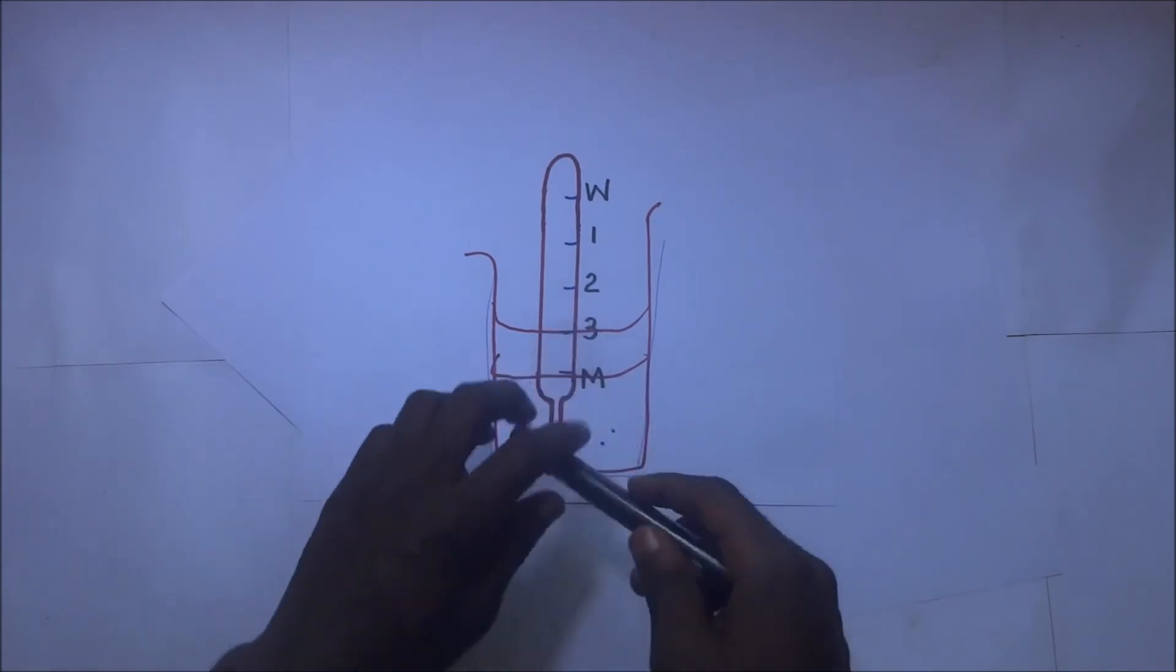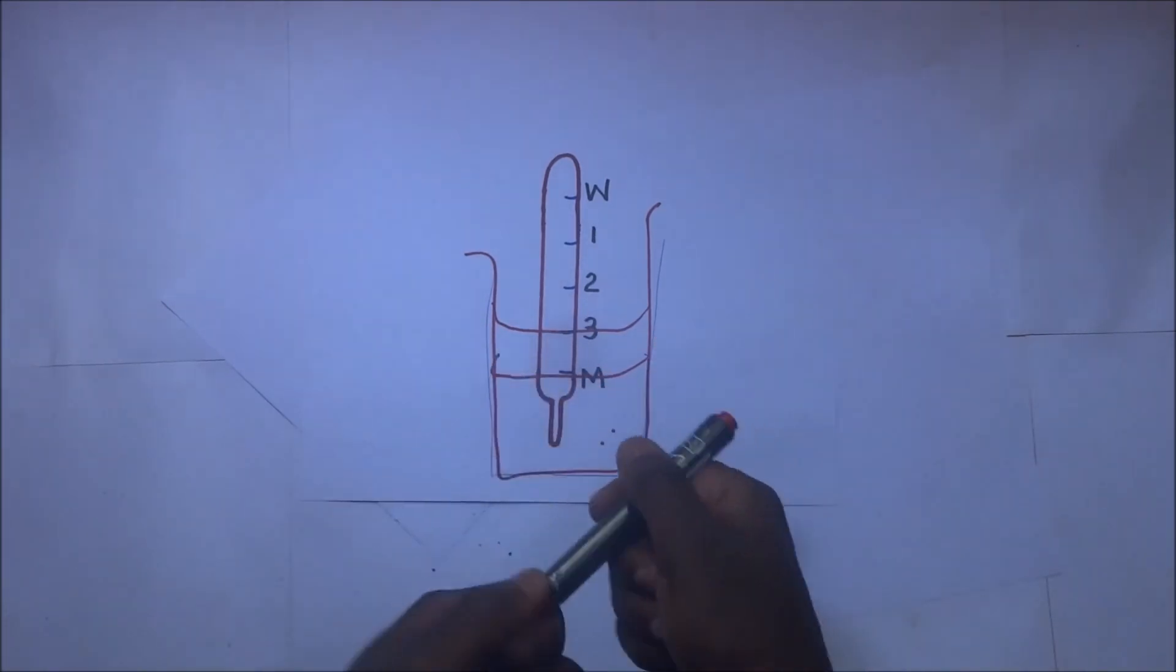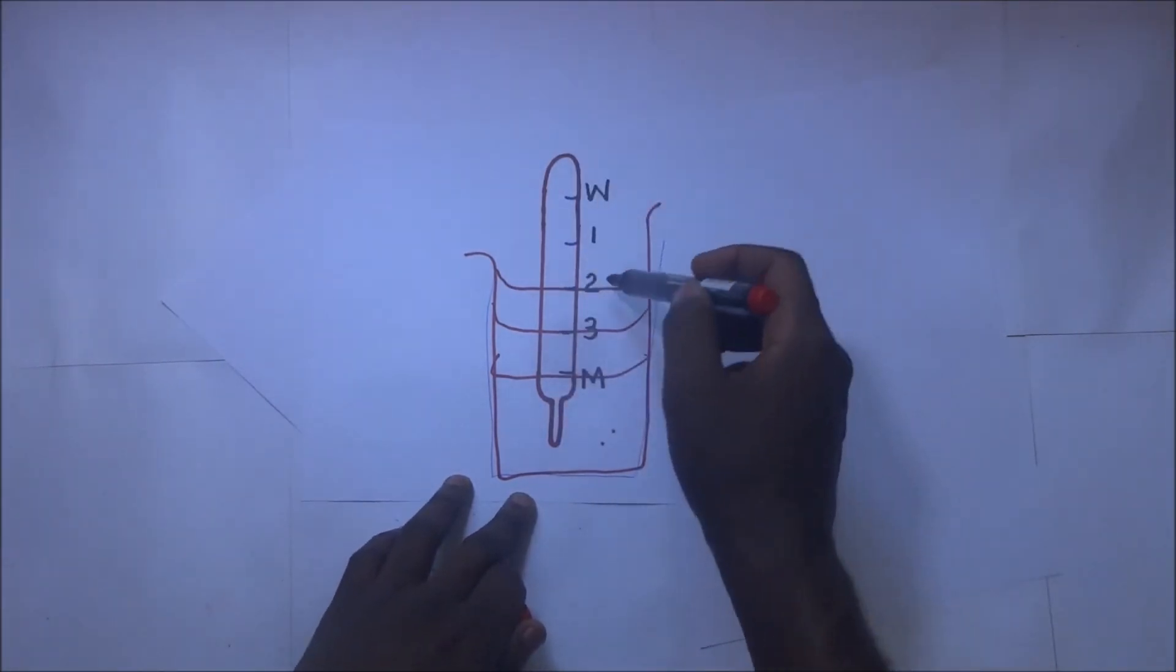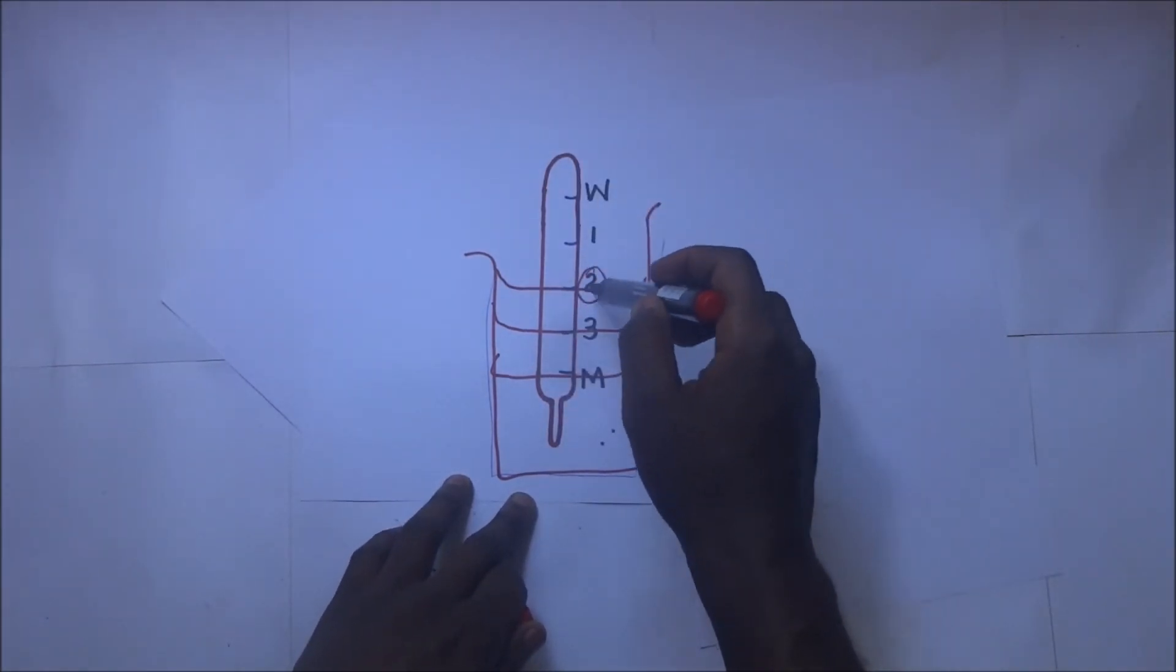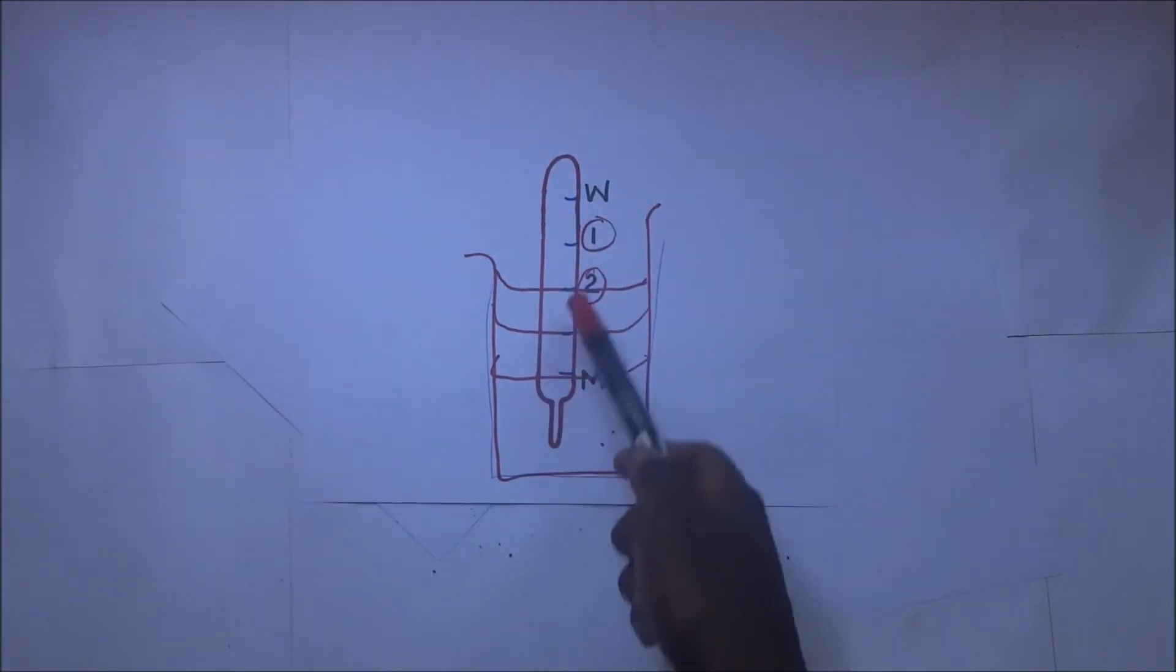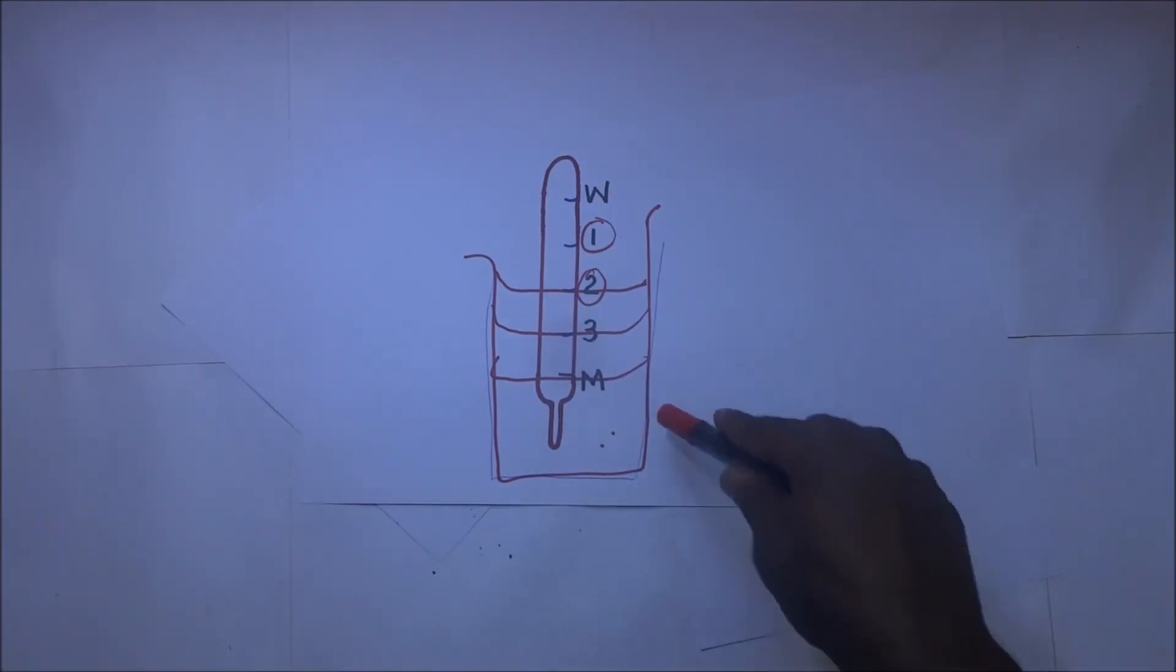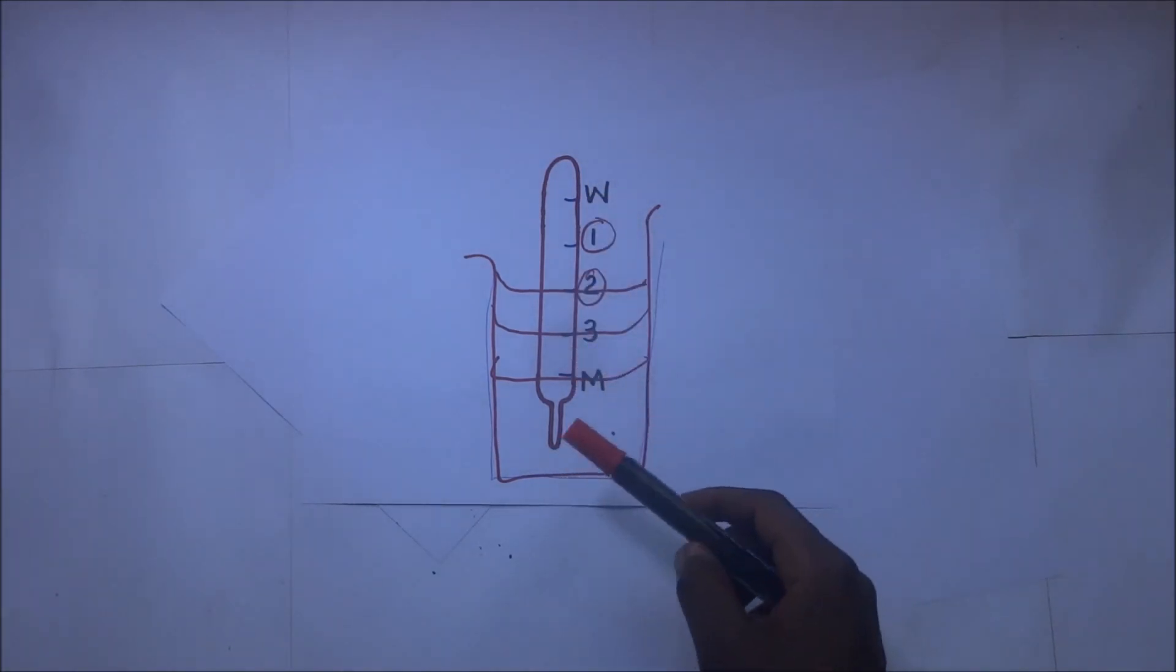If I add more water, the lactometer dips deeper. Level two represents 50 percent concentration of milk, and this one represents 25 percent concentration of milk. This lactometer is simply a hydrometer with different graduations from W to M, and its main purpose is to determine the amount of water in milk.